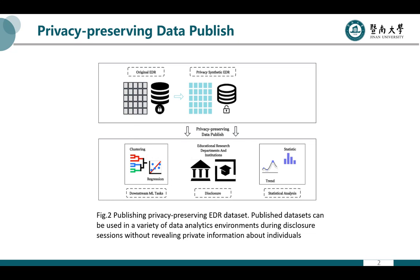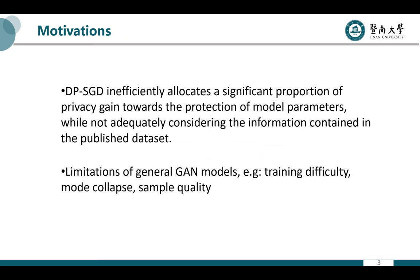In this paper, our research goal is to use original EDR datasets and generate a synthetic version used for privacy-preserving data publishing. A common approach based on deep generative networks is to train the network under a differential privacy constraint — for example, training a GAN model with DPSGD.